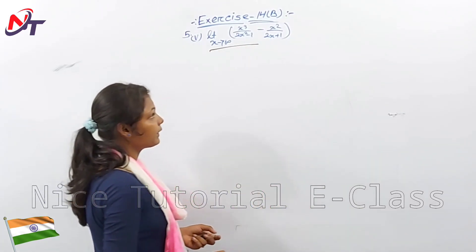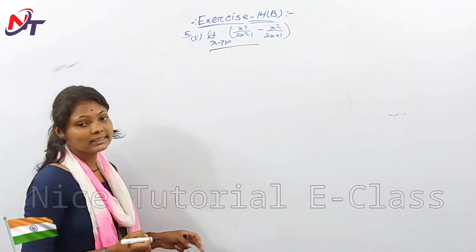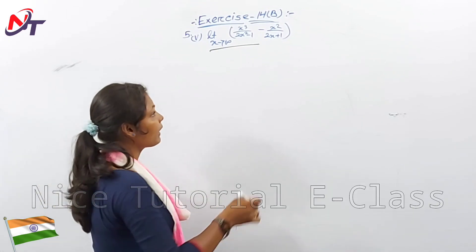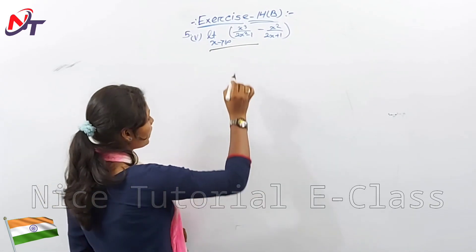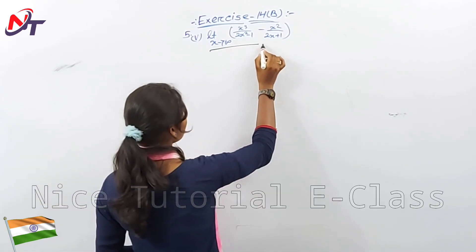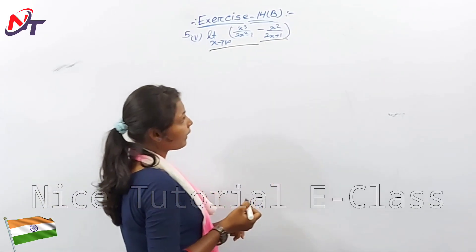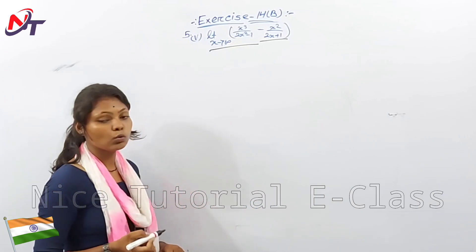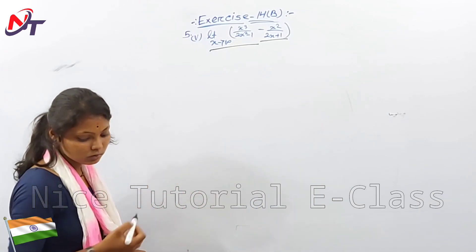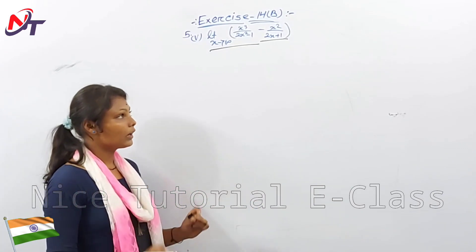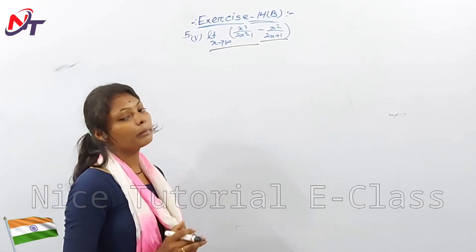Limit x tends to infinity: x³ divided by (2x² minus 1), minus x² divided by (2x plus 1). So, what do we do with this question?